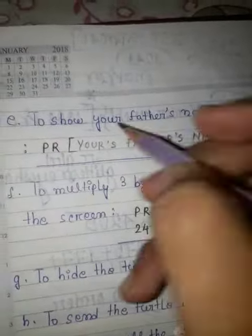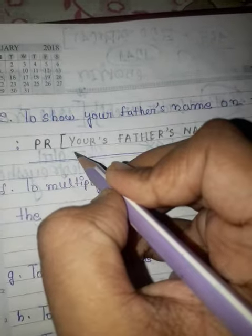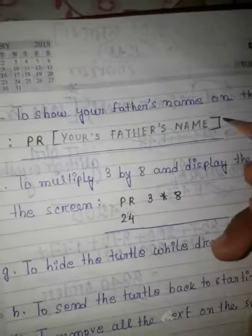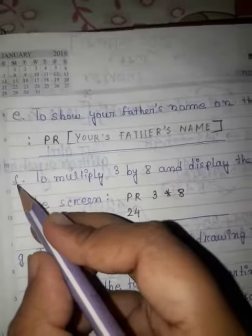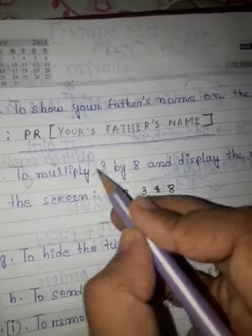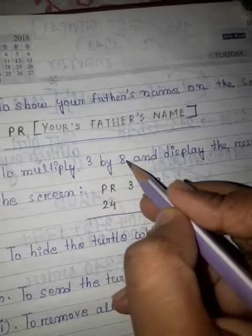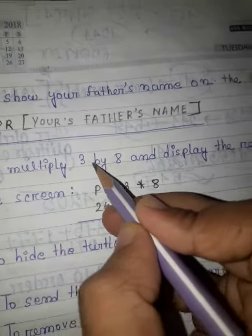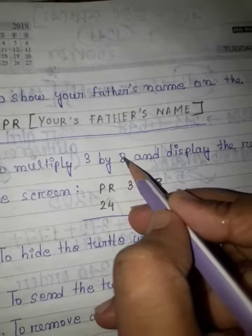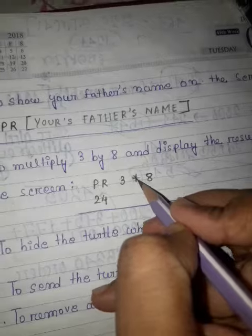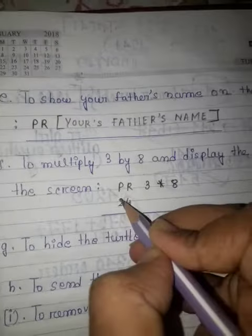To show your father's name on the screen, the command is PR then in quotes your father's name. f) To multiply 3 by 8 and display the result on the screen — the command is PR 3 * 8, and the result is 24.